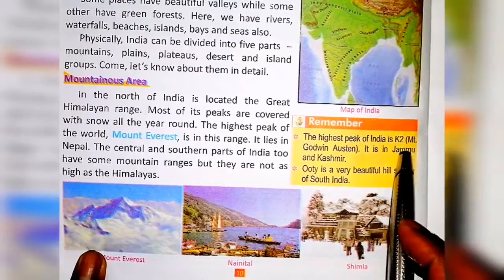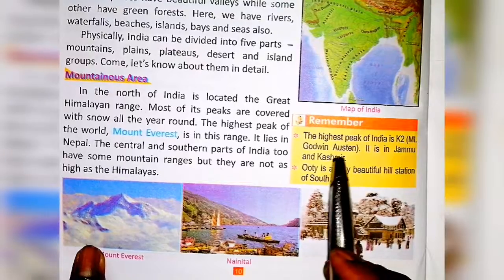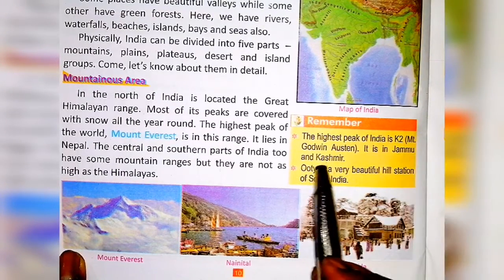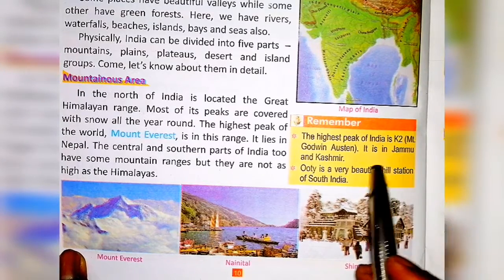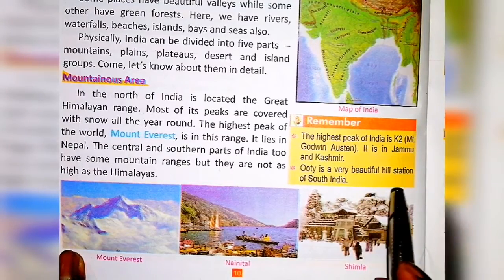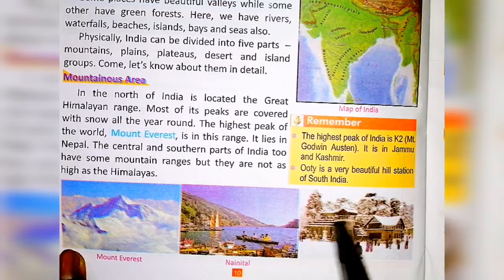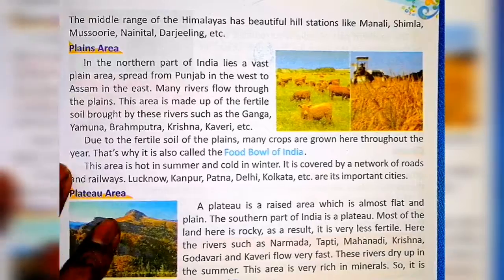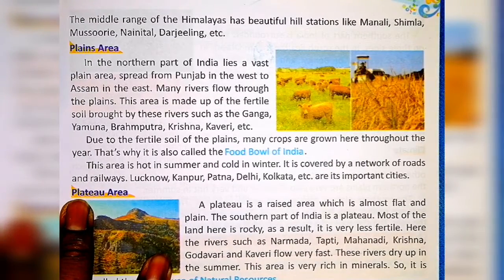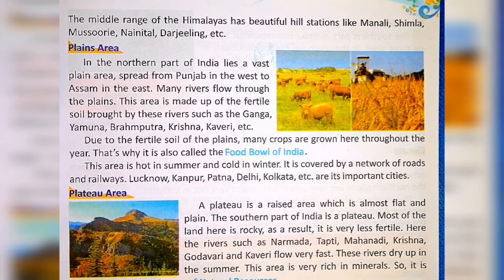Remember: the highest peak of India is K2, also known as Mount Godwin-Austen. It is in Jammu and Kashmir. Ooty is a very beautiful hill station of South India. The middle range of the Himalayas has beautiful hill stations like Manali, Shimla, Mussoorie, Nainital, Darjeeling, etc.